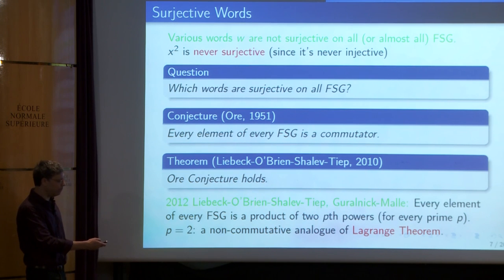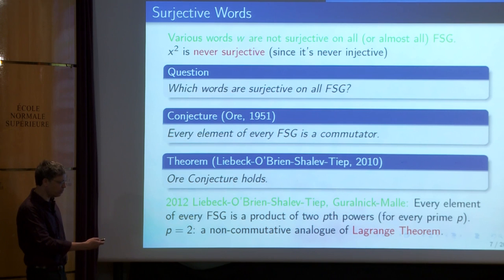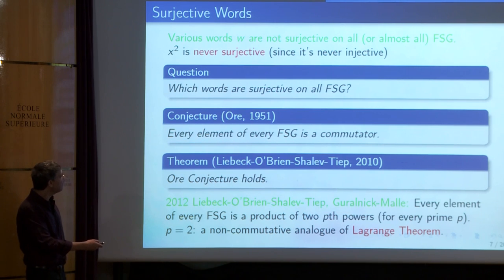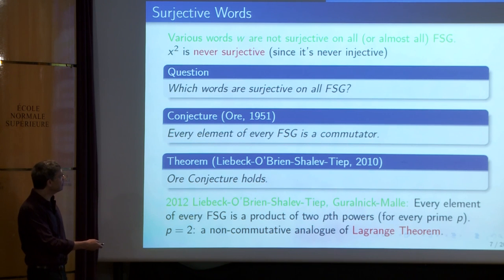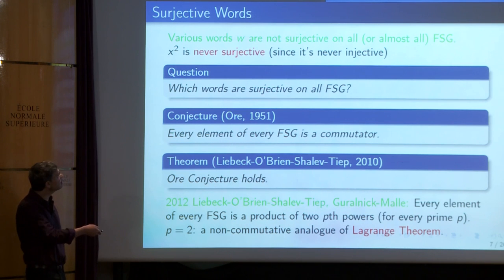Note that this does not follow from the general theorem that wG^2 = G, because for that the group should be large — we want something surjective on all groups without a single exception. It's a kind of miracle that there is no single exception in the Ore conjecture and in the two-squares theorem. This is one of the various miraculous properties of finite simple groups.